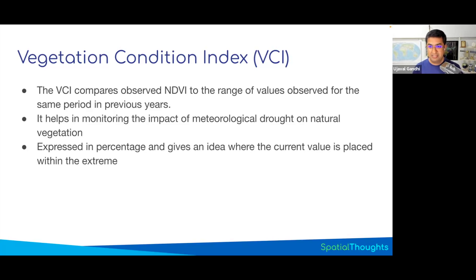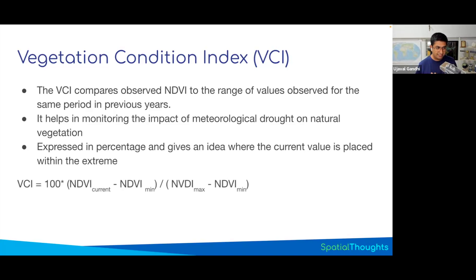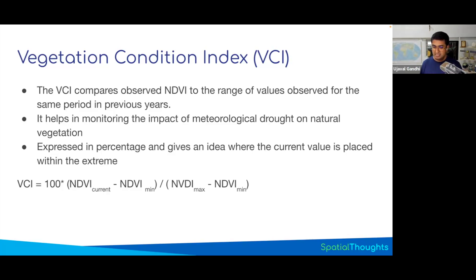VCI is used by many people managing resources. If you see very low VCI in your region, that means at this stage the crops have not grown as much as they should have, and you need to interpret that. The formula is: at each pixel, take the current NDVI, subtract the historic minimum, and divide by the historic maximum minus the historic minimum. You get VCI values as a percentage — 100% means it's the maximum that has ever been, 0% means the historic minimum. You can classify this into good, bad, or healthy categories.